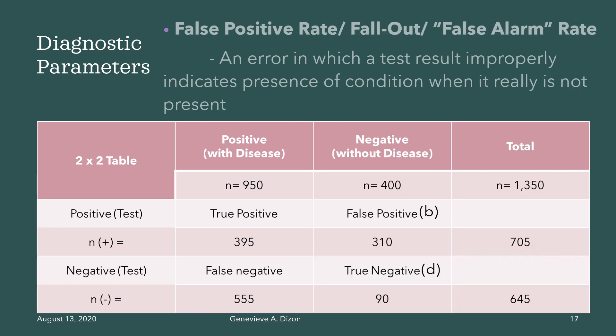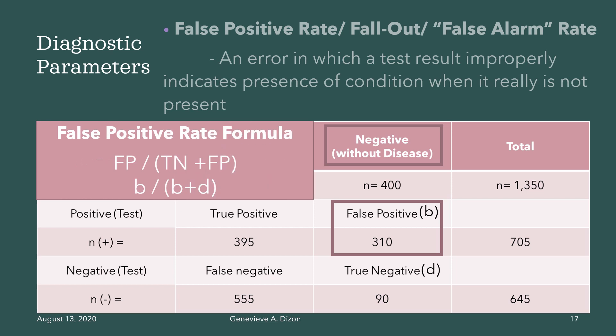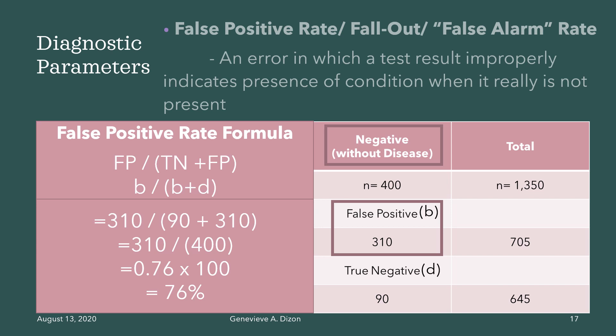The last parameter is the false positive rate, also known as the fallout rate or false alarm rate. This is an error in which a test result improperly indicates the presence of the condition when it is really not present. The formula is false positive divided by true negative plus false positive, or B divided by B plus D. The values are 310 divided by 400, multiplied by 100, giving a false positive rate of 76% for this test.